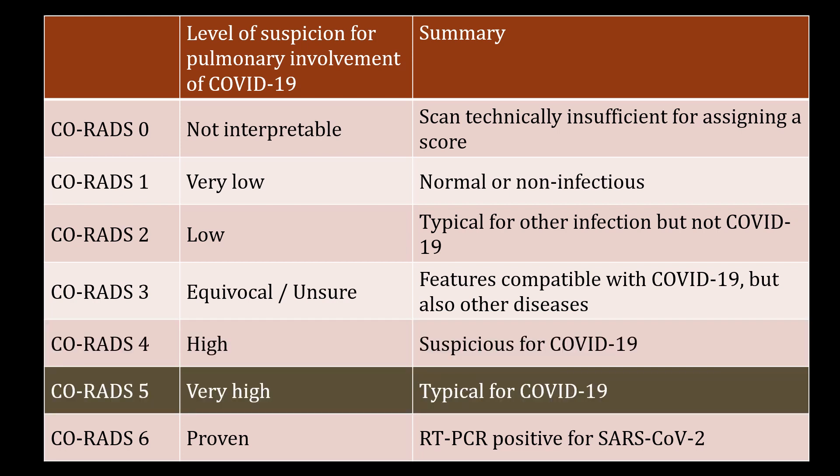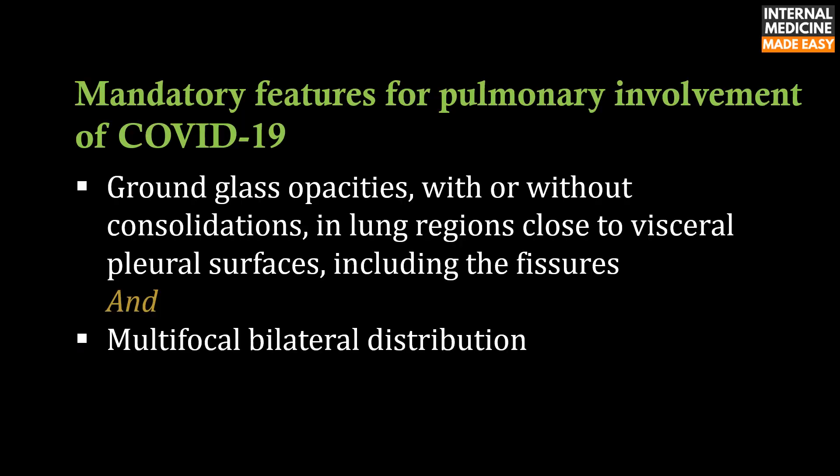CORADS-5 implies a very high level of suspicion for pulmonary involvement by COVID-19 based on typical CT findings. The mandatory features are ground glass opacities with or without consolidations in lung regions close to visceral pleural surfaces including the fissures, and multifocal bilateral distribution.